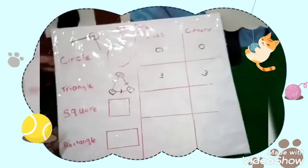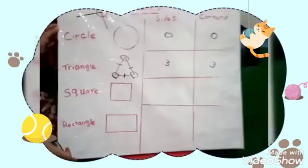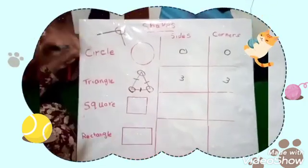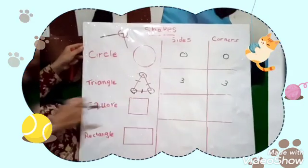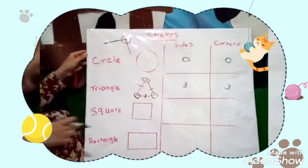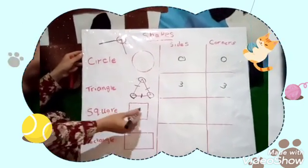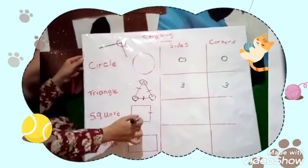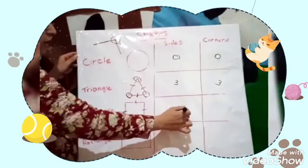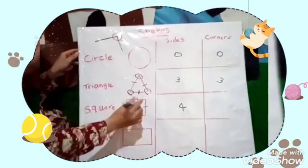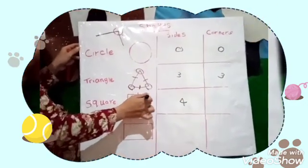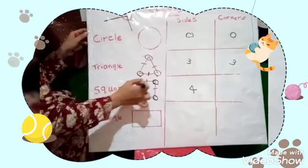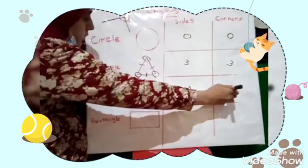Next one. What's this? Square. Square. How many sides? One, two, three, four. How many corners? One, two, three, four. Four.